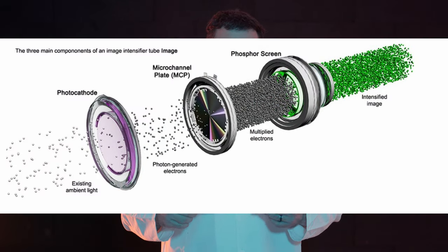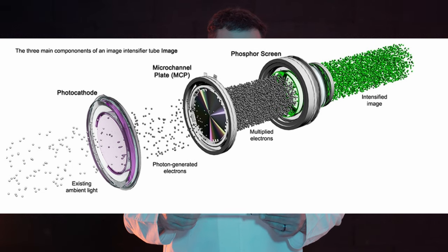The first metric we're going to be discussing is photocathode sensitivity. A photocathode is a surface engineered to convert light or photons into electrons. Photocathode sensitivity is a measure of how well the image intensifier tube converts light into an electronic signal so that it can be amplified. The measuring unit of photocathode sensitivity is described as microamps per lumen.